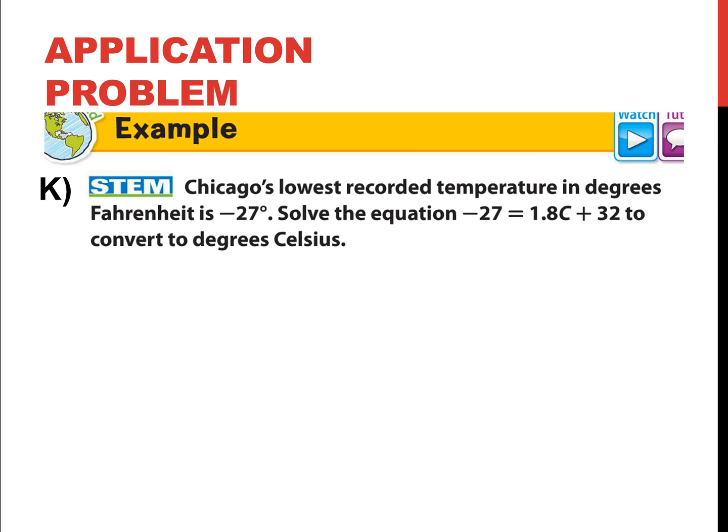All right. Let's, I can't let something go by without throwing an application problem at you. And I know some people are looking at the word problem going, I can't solve this. You're wrong. Chicago's lowest recorded temperature in degrees Fahrenheit is negative 27 degrees. Solve the equation. They give it to you people. They don't bury the lead.